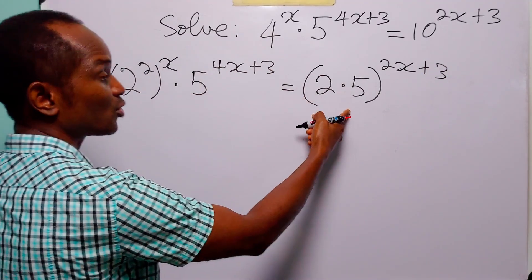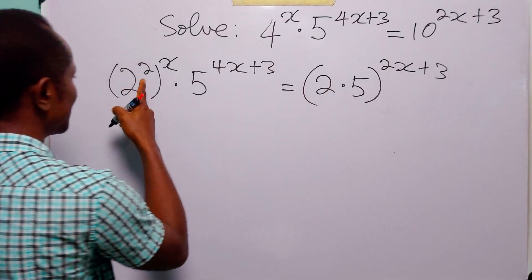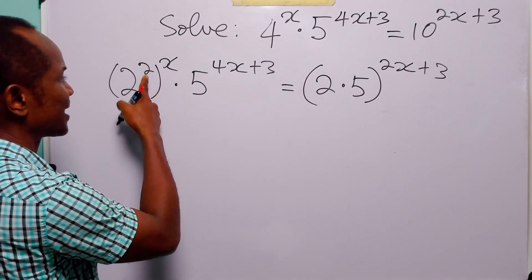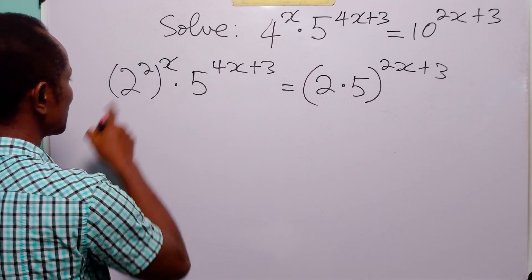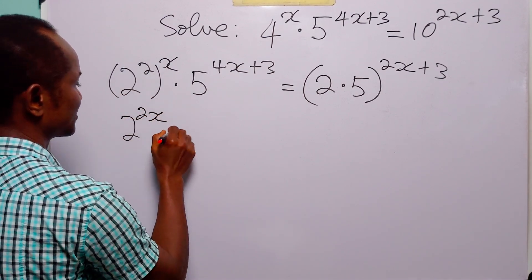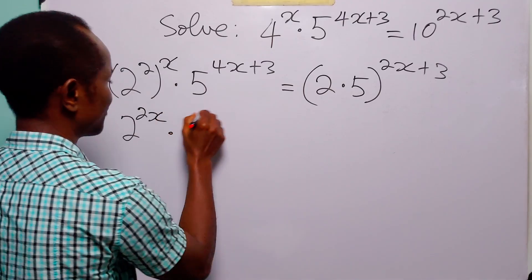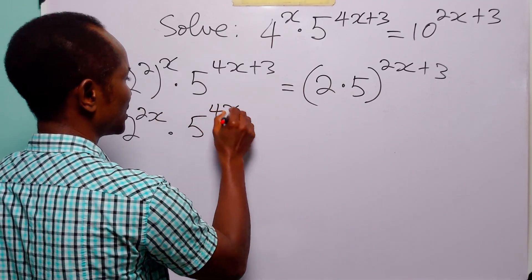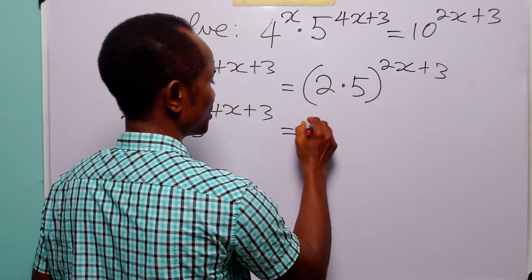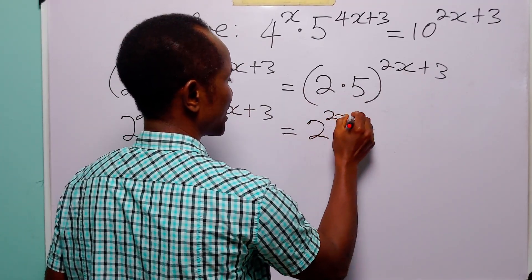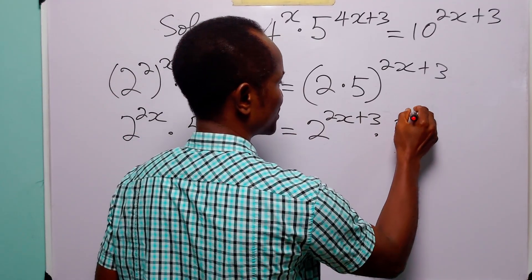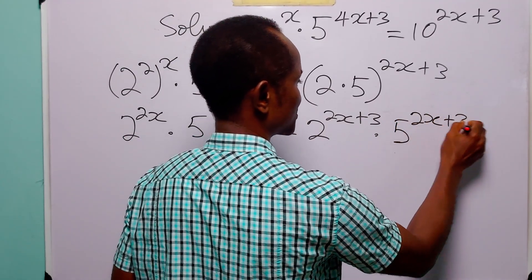The next thing we are going to do is to open all the brackets. In situations like this, what we do is to simply multiply the two powers. So here we have 2 to the power 2x. Here we have 5 to the power 4x plus 3. And here also we have 2 to the power 2x plus 3 multiplied by 5 to the power 2x plus 3.